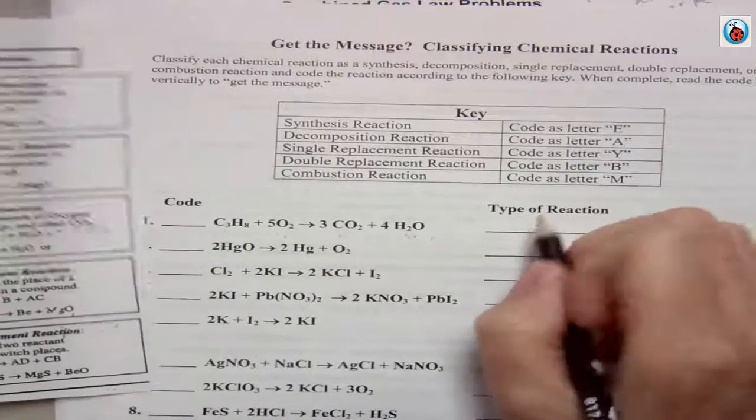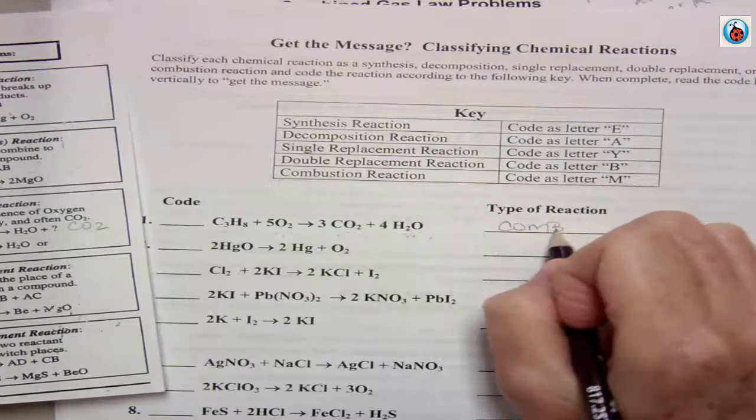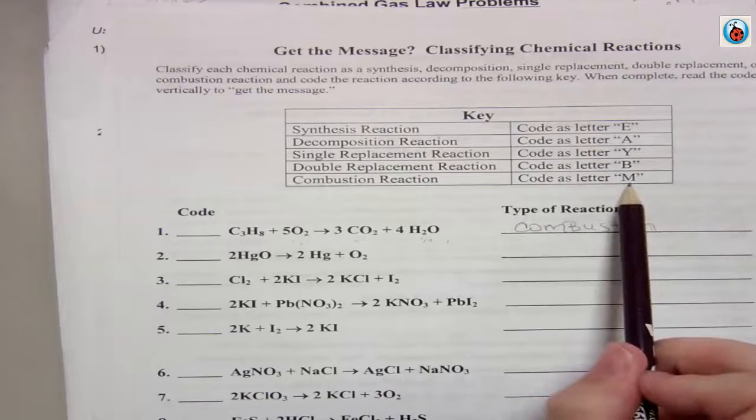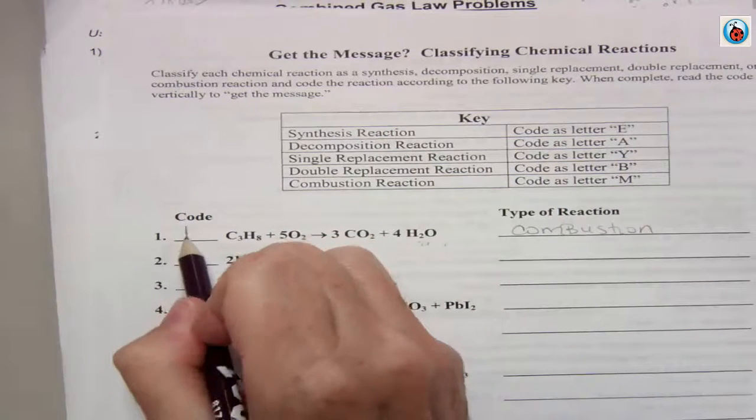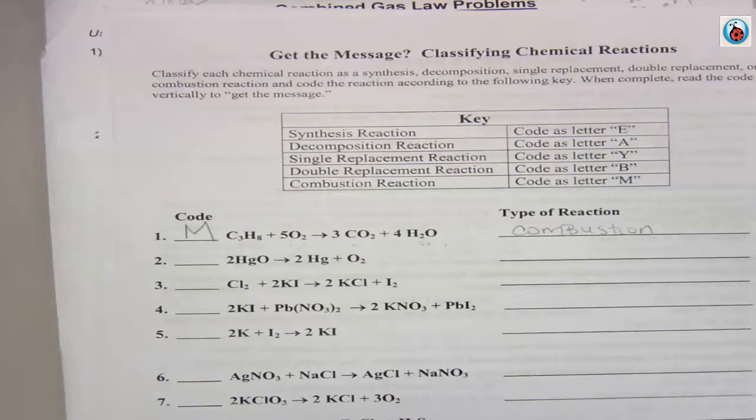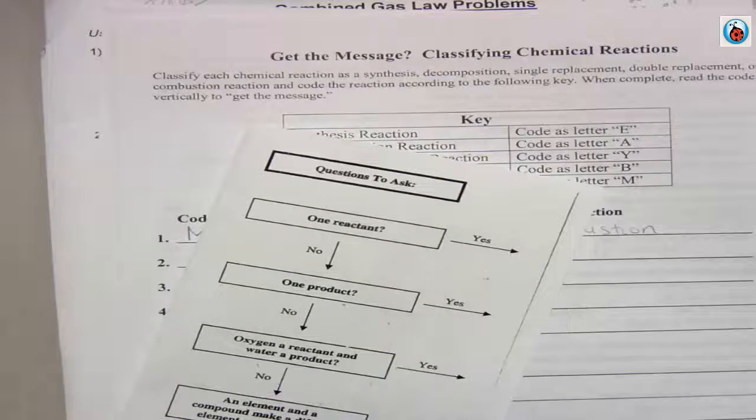so then I'm going to write combustion here, and then I will go up here and find out, okay, so the key for combustion is M, so I'm going to put an M there, and it's going to spell out a secret message. Okay, so if you need help with either one of those pages, let me know.